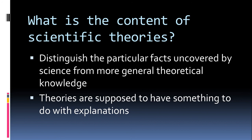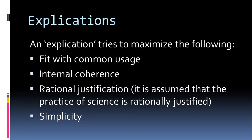It's worth saying upfront, mostly for the historians in the room, that what I'm going to be doing is what philosophers call an explication — that is, we're trying to maximize fit with common usage, internal coherence, rational justification, and epistemic goods like simplicity. I'm trying to come up with an account of the content of scientific theories that captures most of what we usually mean by words like 'law' and 'model,' but I'm not strictly tied to that. It's a mixed normative-descriptive project.